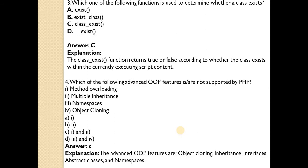Which of the following advanced object-oriented programming features are not supported by PHP? Answer is C — method overloading and multiple inheritance are not supported. Features like object cloning, inheritance, interfaces, abstract classes, and namespaces are supported by PHP.